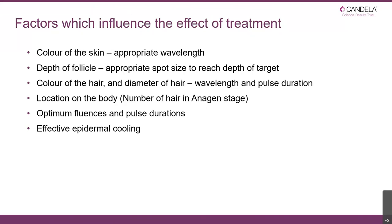The colour and diameter of the hair are also important, where wavelength and pulse duration are key considerations. Location on the body matters particularly because of the percentage of anagen hair in a specific area — the higher the percentage of anagen hair, the more hair you will destroy in each treatment, and also the speed of regrowth is higher. Using optimum fluences and pulse duration is important, and depending on the system, having an effective way of cooling the epidermis makes the treatment safer and reduces side effects.